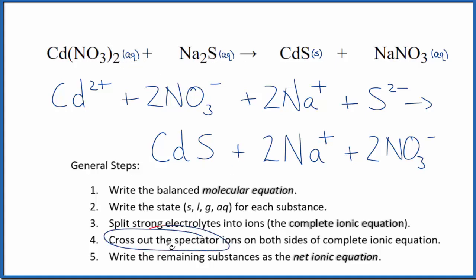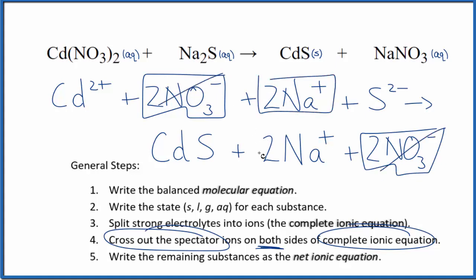Now we can cross out the spectator ions. They're on both sides of that complete ionic equation. So when we look at this, we see reactants on the top, two nitrate ions. On the bottom, the products, two nitrate ions. So those are spectator ions, get rid of those. Two sodium ions, two sodium ions, spectator ions, cross them out.